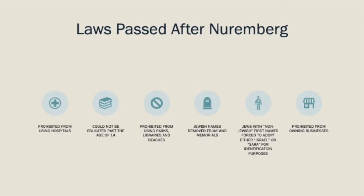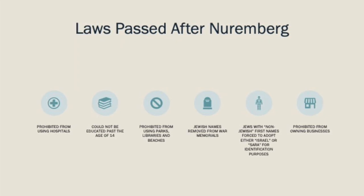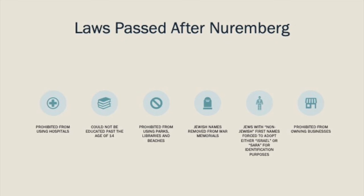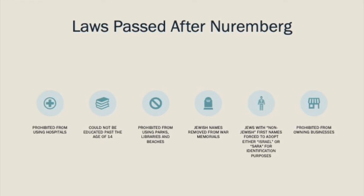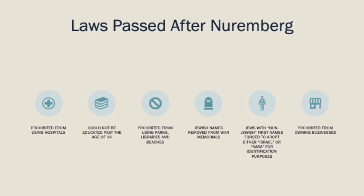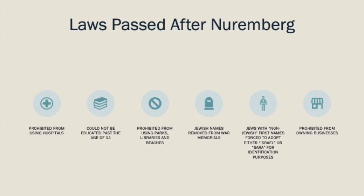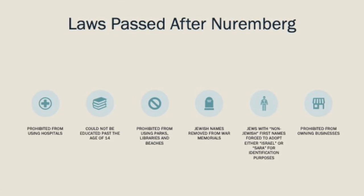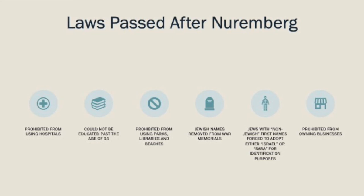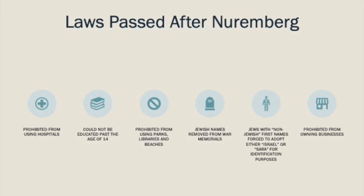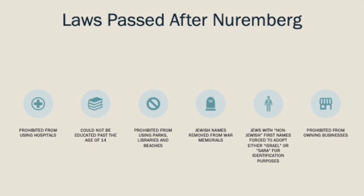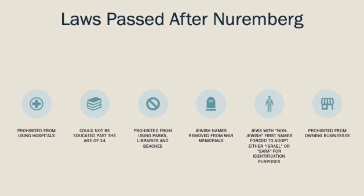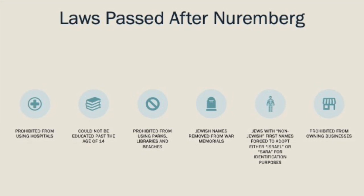After the Nuremberg Laws are passed, we start to see an uptick in additional pieces of anti-Semitic legislation. A few of those are on this slide — things like being prohibited from going to hospitals or having Jewish names removed from war memorials. We see that this is a systemic process, and that these anti-Semitic laws are only the first step on the road to the Holocaust. In the lesson on Tuesday, we are going to take a look at how these laws actually impacted Jews during this time.